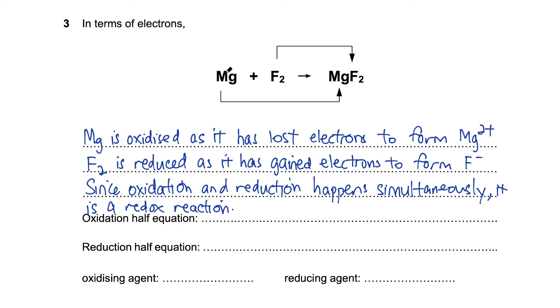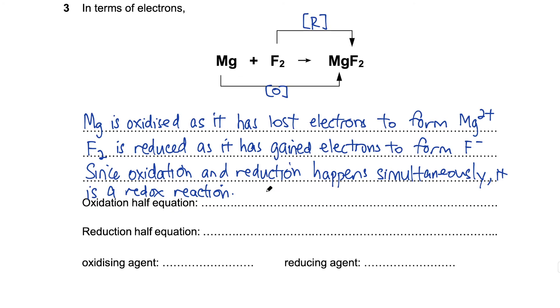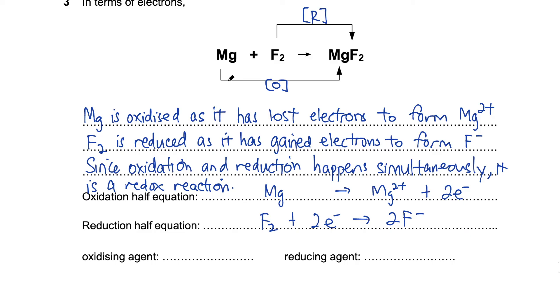In question 3, magnesium forms the Mg2+ ions by losing electrons. This is oxidation. Fluorine gains electrons and is reduced, forming F-. The oxidation half equation would be magnesium becoming Mg2+. Two electrons are lost. Fluorine gains electrons to form fluoride ions. Magnesium is being oxidized, so what causes it? It must be fluorine. Therefore, magnesium is the reducing agent.